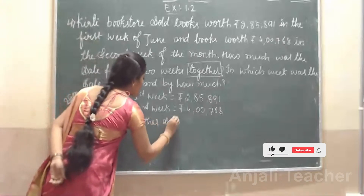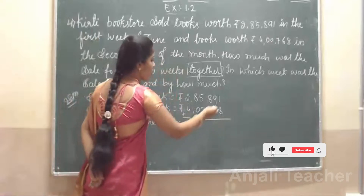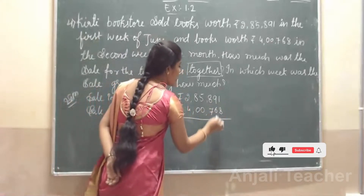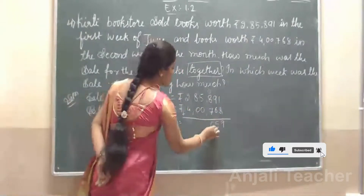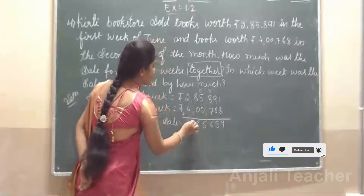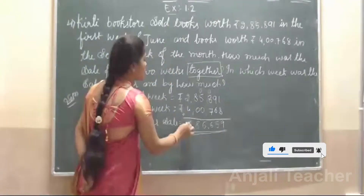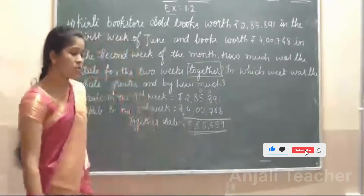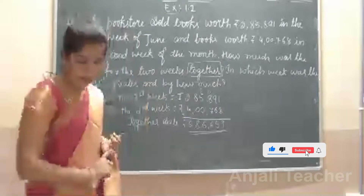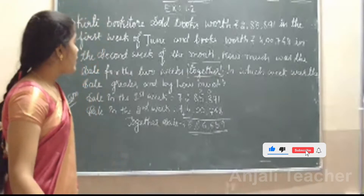Together means plus. So: 1 plus 8 is 9, 9 plus 6 is 15, 8 plus 8 is 16, 5 plus 1 is 6. Total rupees 6,86,659 for both weeks combined.